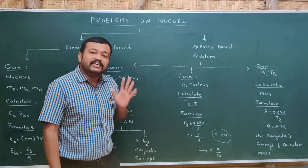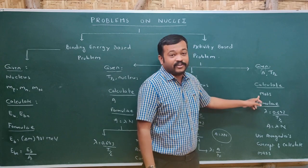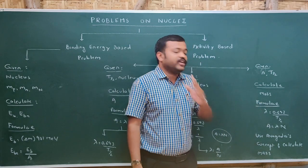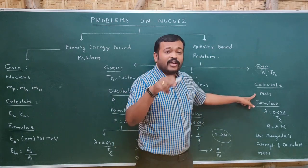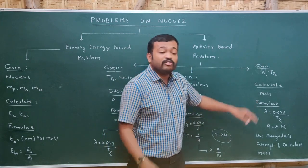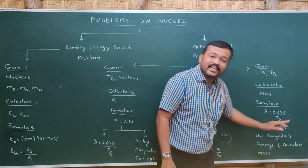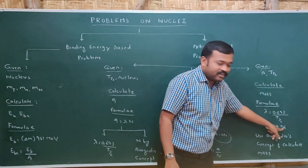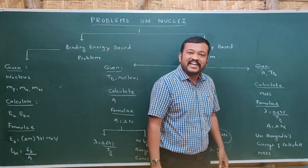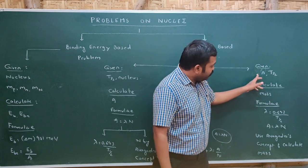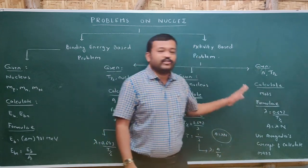In the third type of activity problem, both activity and half-life are given and we need to calculate the mass of the substance. Mass is calculated from N (number of nuclei). From A = λN, we get N = A divided by λ. Since T-half is known, first calculate λ = 0.693 divided by T-half, then find N, and from N calculate mass using Avogadro's concept.